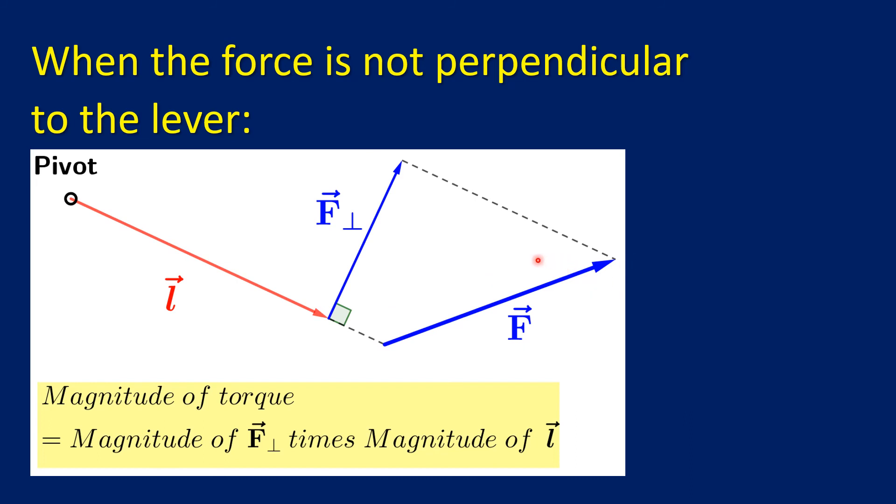In this case, we use the idea of a projection again. It's the projection of the force upon a direction perpendicular to the lever. The magnitude of the torque is found by a multiplication of the magnitude of the perpendicular projection and the magnitude of L, which is the length of the lever.